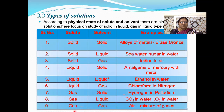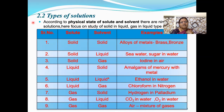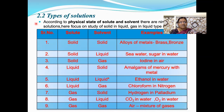So these are the nine types of solutions depending upon the physical state of solute and solvent. The physical state of a solution is determined by the physical state of the solvent. When the solvent is solid, they are called solid solutions; when liquid, they are liquid solutions; and when gas, they are called gaseous solutions.